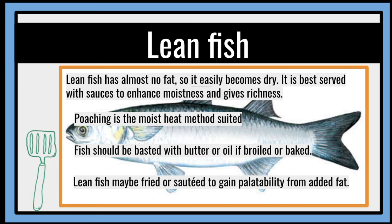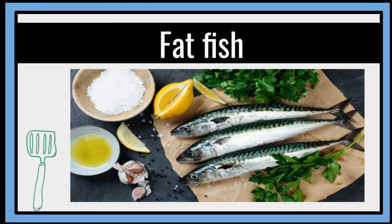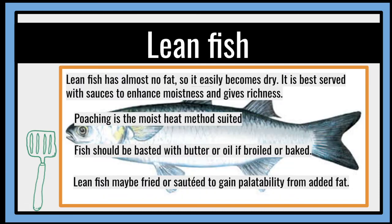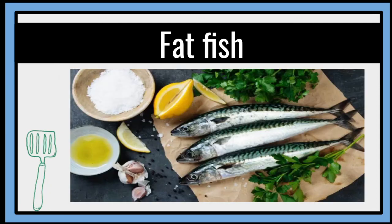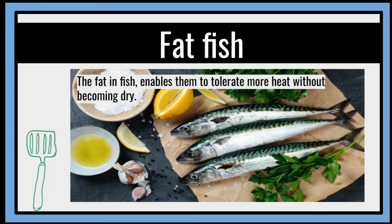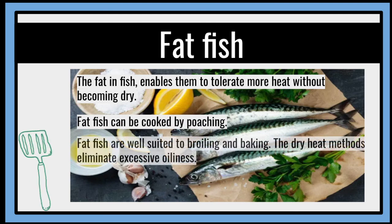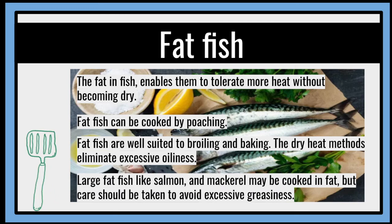For the fat fish, the fat in fish enables them to tolerate more heat without becoming dry. Fat fish can be cooked by poaching, and fat fish are well suited to broiling and baking. The dry heat methods eliminate excessive oiliness. Large fat fish like salmon and mackerel may be cooked in fat, but care should be taken to avoid excessive greasiness.